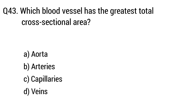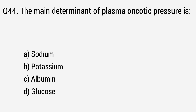Question 43. Which blood vessel has the greatest total cross-sectional area? The right answer is Option C: Capillaries. Question 44. The main determinant of plasma oncotic pressure — the right answer is Option C: Albumin.